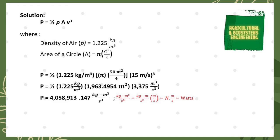After solving, we have ½ times 1.225 kilograms per cubic meter times 1,963.4954 square meters times 3,375 cubic meters per cubic second. After multiplying, we have a result of 4,058,913.147 kilogram meter squared per cubic second.